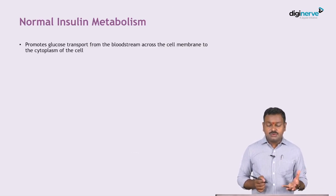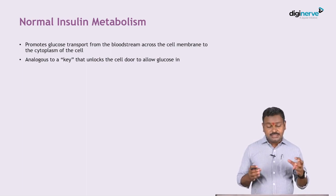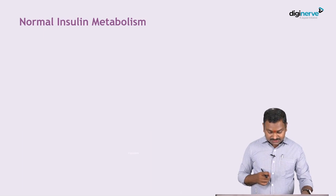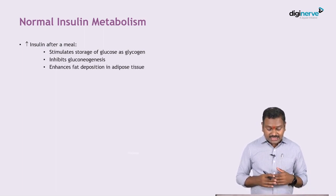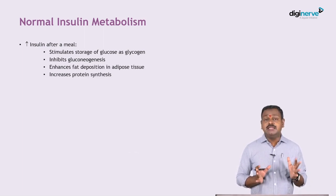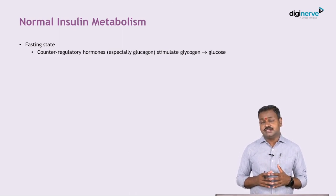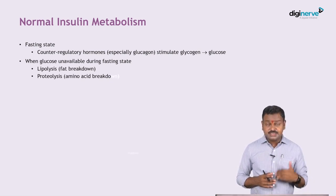Normal insulin metabolism: insulin promotes glucose transport from the bloodstream across the cell membrane into the cytoplasm of the cell, analogous to a key that unlocks the cell door to allow glucose in. Without insulin, glucose cannot enter the cell and metabolism cannot progress. Increased insulin after a meal stimulates storage of glucose as glycogen, inhibits gluconeogenesis, enhances fat deposition in adipose tissue, and increases protein synthesis. In a fasting state, counter-regulatory hormones — especially glucagon — release glucose via glycogenolysis from the liver, with lipolysis and proteolysis also occurring.